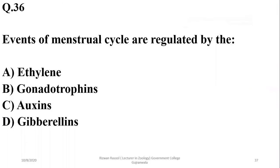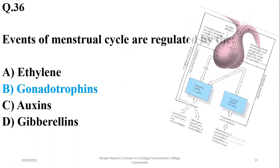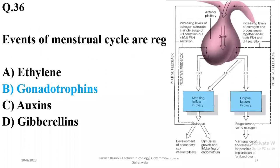Number thirty-six: events of the menstrual cycle are regulated by pituitary gonadotrophins — FSH as well as LH — which perform the rest of the functions of menstrual cycles by inducing the production of progesterone as well as estrogen.